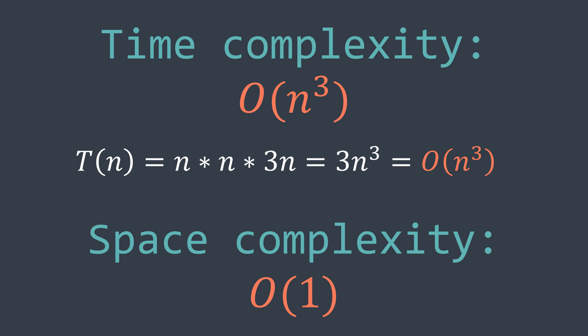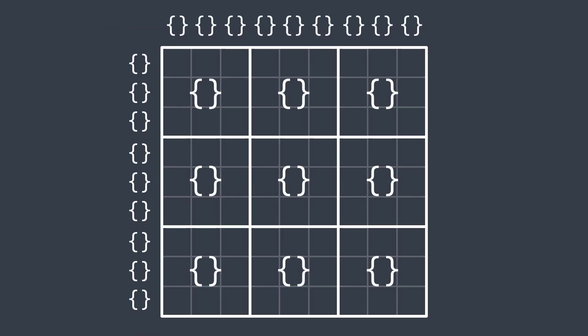The optimized solution that we're going to use works by using sets. We will use a set for each row, a set for each column, and a set for each square. And for each cell, we just have to check if it's already existing in the set of its row, column, or square. And if it does, then it's a duplicate, we return false. Else, we just add it and we continue. And the cool thing with this solution is that we need to traverse each cell only once.